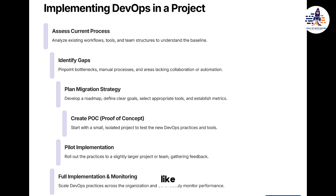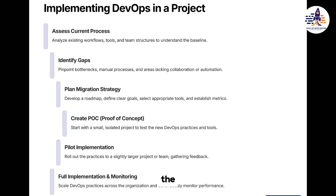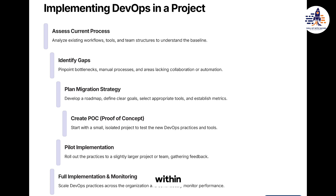Suppose we took some areas from a project and implemented DevOps there — at the end can we get the UAT done from the customers and then implement it in the whole project? Yes, that's right. We do the POC, and once the POC is accepted — whether by UAT, within the team, or by an approver — then we are good with it.